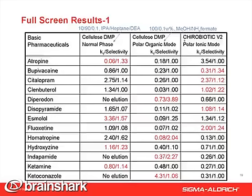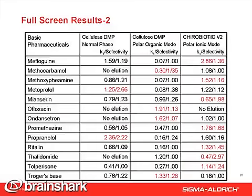This slide shows the screen result of 26 basic drugs in alphabetical order — normal phase, polar organic phase on Cellulose DMP, and polar ionic mode on Chirobiotic V2. The data of k-prime and selectivity are shown, and the best results of three runs are in red. Continuing from the previous slide, this is from a blind screen — better results can be obtained through optimization. Twenty out of 26 samples showed better results in polar ionic mode. Cellulose DMP and Chirobiotic V2 are very complementary: together, 22 out of 26 showed baseline separation already in this blind screen.